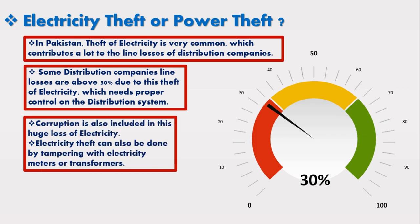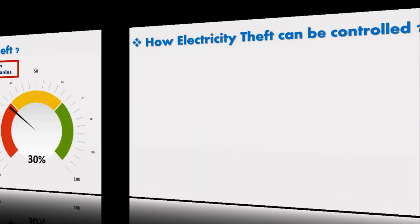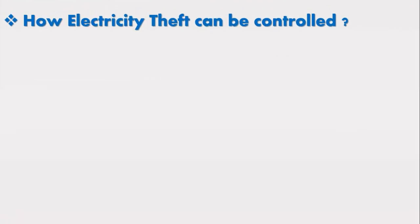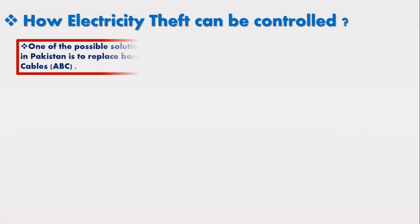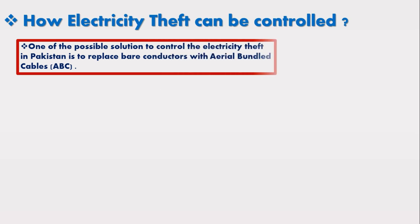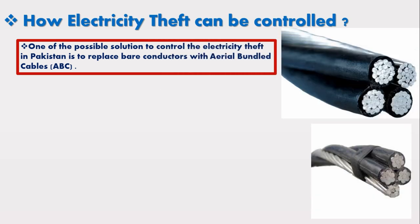Corruption is also included in this huge loss of electricity. Electricity theft can also be done by tampering with electricity meters or transformers. One of the possible solutions to control electricity theft in Pakistan is to replace the bare conductor with aerial bundled cable.